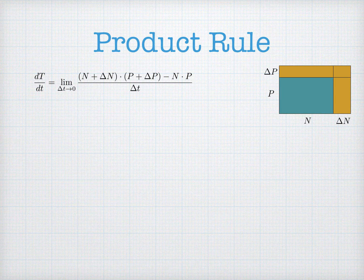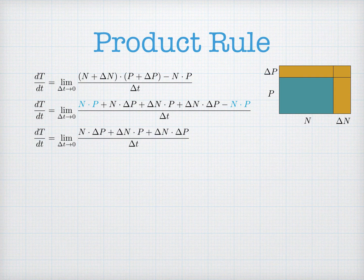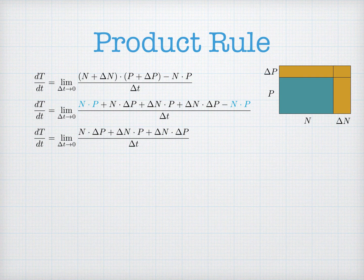When I expand this out and FOIL it, the n times p in my product cancels the n times p of my initial Nutella. So I end up with only three terms in the numerator, which correspond to the three subsections of the orange rectangle that we can see. There's n times the change in p — that's the rectangle at the top left. There's delta n times p — that's the rectangle at the far right. And delta n times delta p — that's the small rectangle in the top right. Those are the three contributions of change.